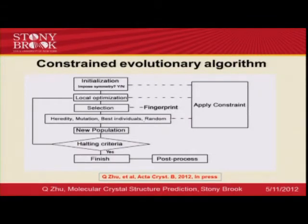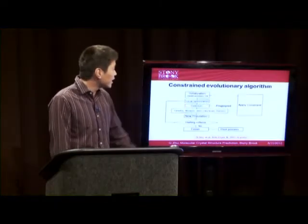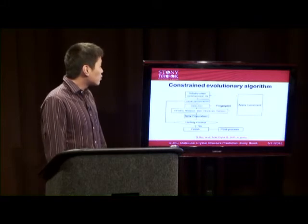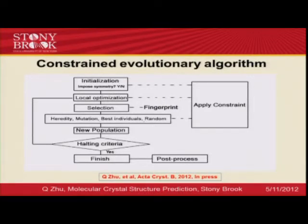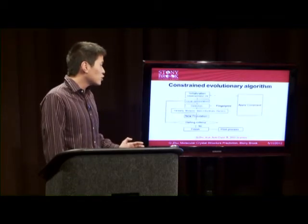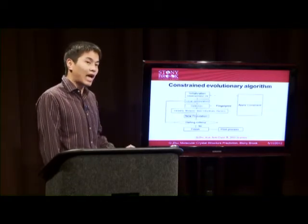Following the standard evolutionary algorithm approach, we generate structures randomly, then send these structures for local optimization, then select structures according to their energy, and use the selected structures to generate new structures by a set of variation operators. Because during selection the good genes of good structures are maintained, population by population, better structures can be found until convergence is reached.